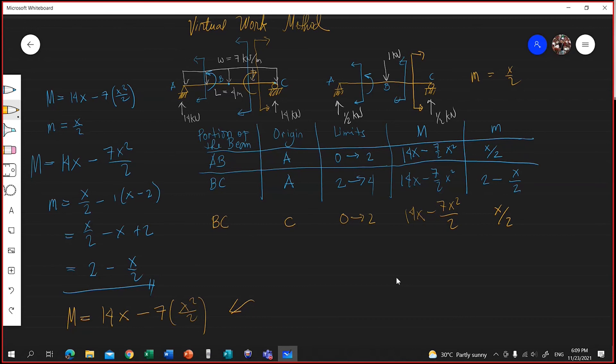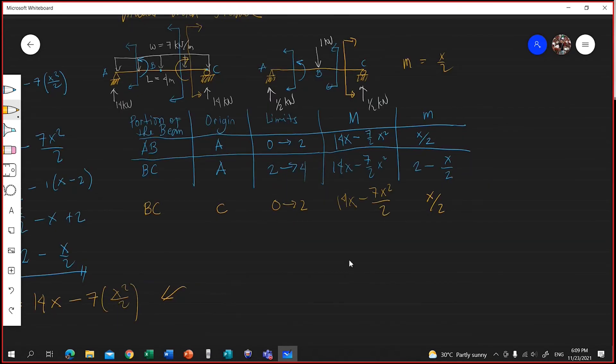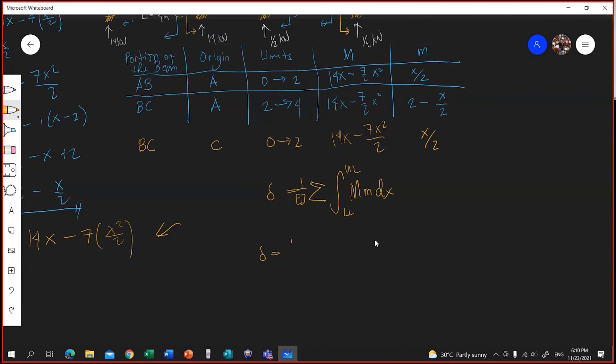The deflection delta on the point where you applied the unit load is equal to the summation of the integral of M times m dx from lower limit to upper limit. Your lower limit to upper limit are the limits. Over EI, or 1 over EI. The delta is equal to 1 over EI summation of the integral of M times m dx from lower limit to the upper limit. So the deflection here is equal to 1 over EI. EI is not given, summation.